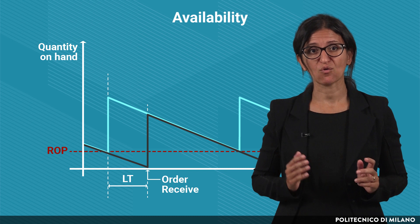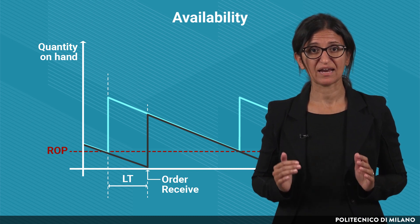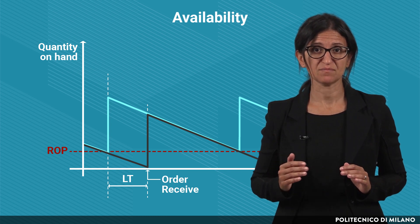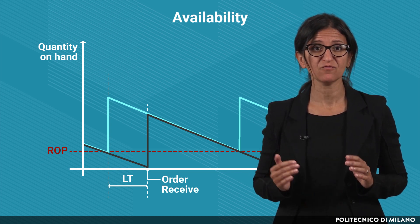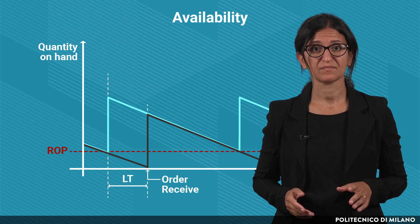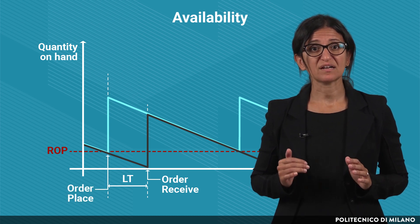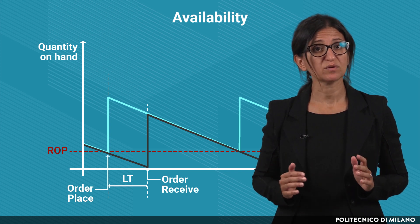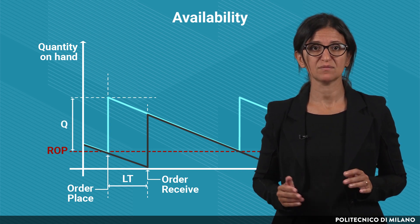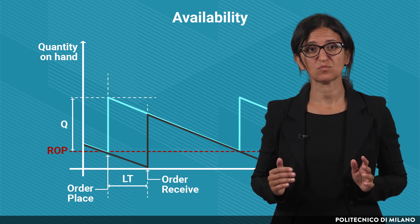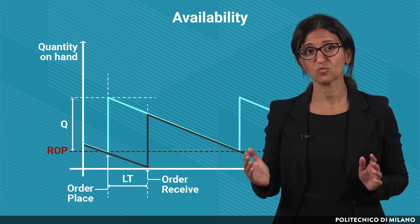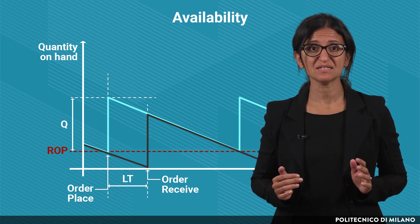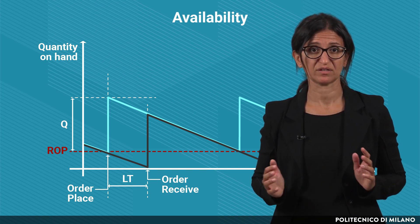Vertically, because the orders are placed when the inventory level reaches the reorder point quantity, the maximum availability is higher than the maximum physical inventory. At the time the order is issued, the availability increases by a quantity equal to Q. Therefore, the maximum availability is equal to the reorder point plus the order quantity Q. The minimum level of availability is equal to the reorder point.